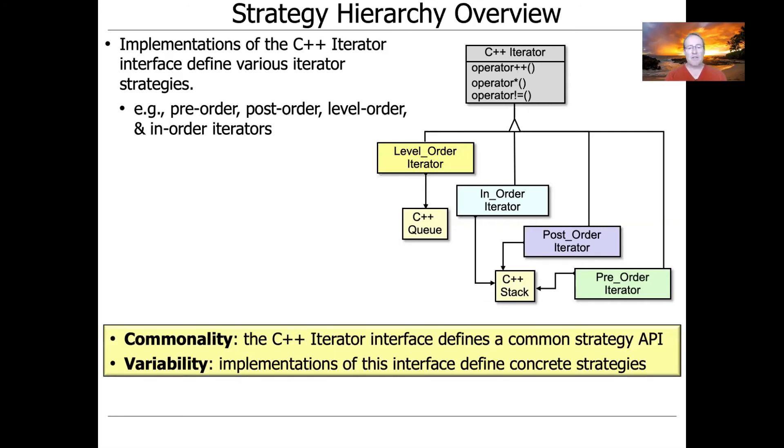So from a commonality and variability point of view, the C++ iterator interface gives us a common strategy API, which is what you'd come to know and love if you understand STL, as you should by now. And from a variability point of view, we can implement this interface to define different concrete strategies for different traversal orders.